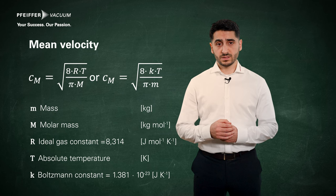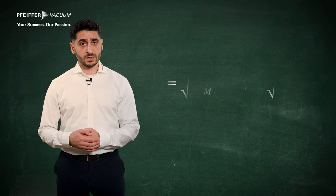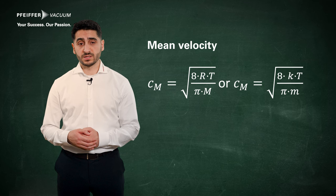The formula for the mean velocity is Cm equals the root of 8 multiplied by the ideal gas constant and the temperature divided by pi multiplied by the molar mass. If we take a closer look at these formulas, we can draw the following conclusion for the description of the velocity of particles.